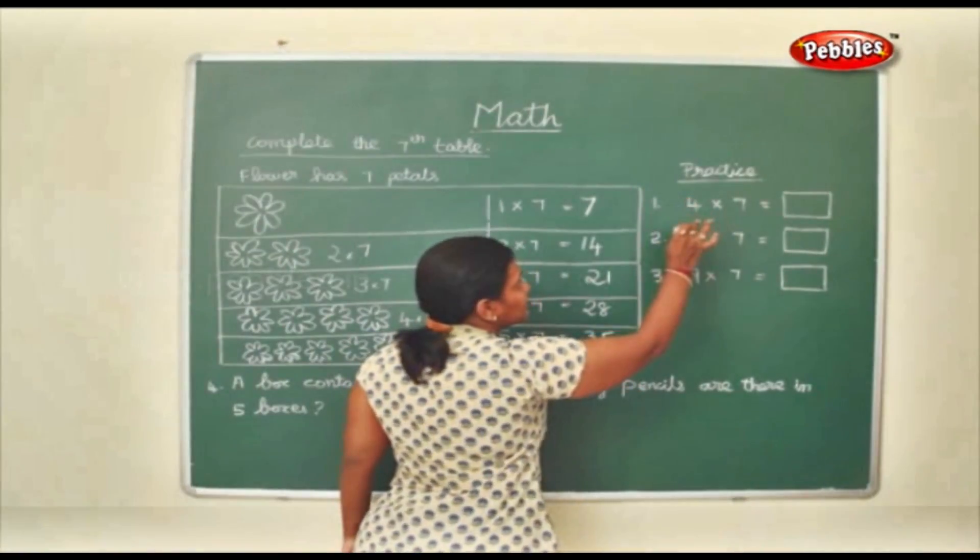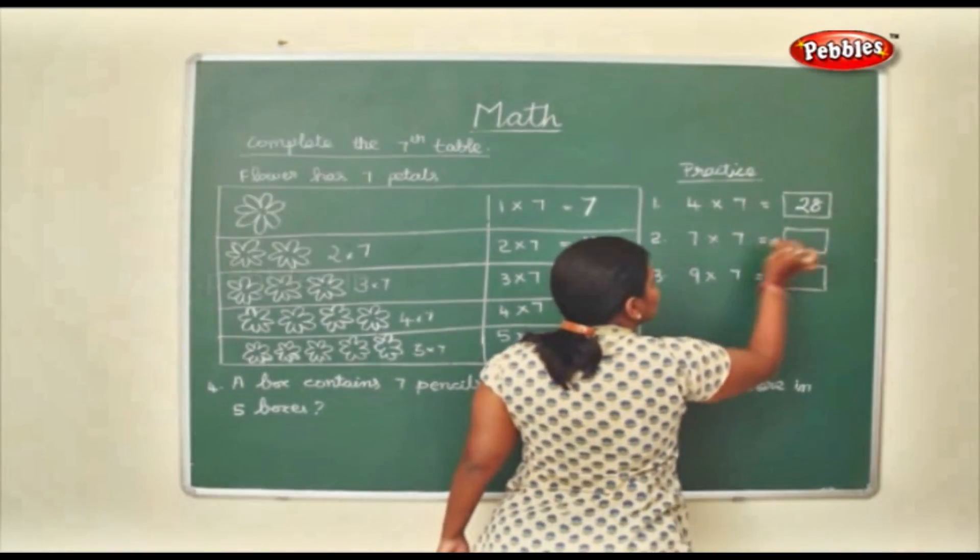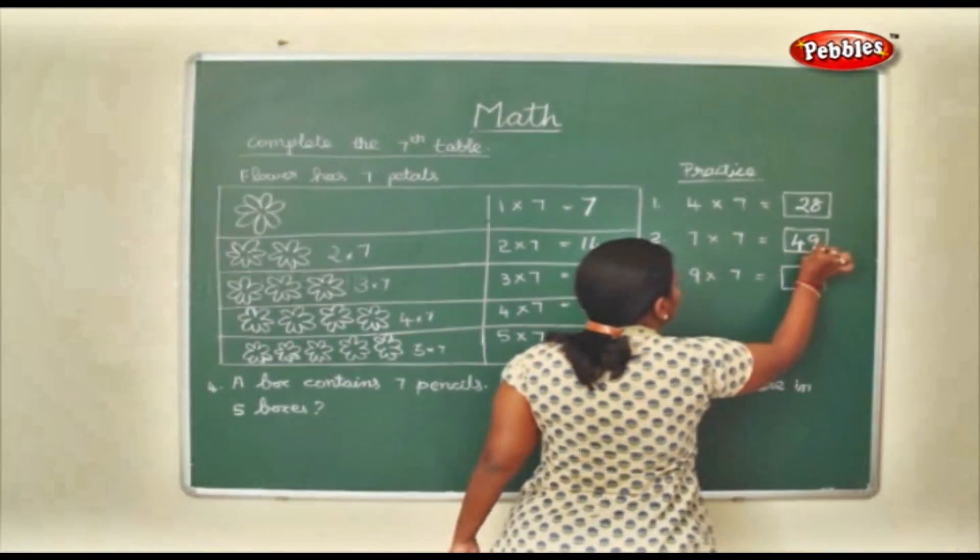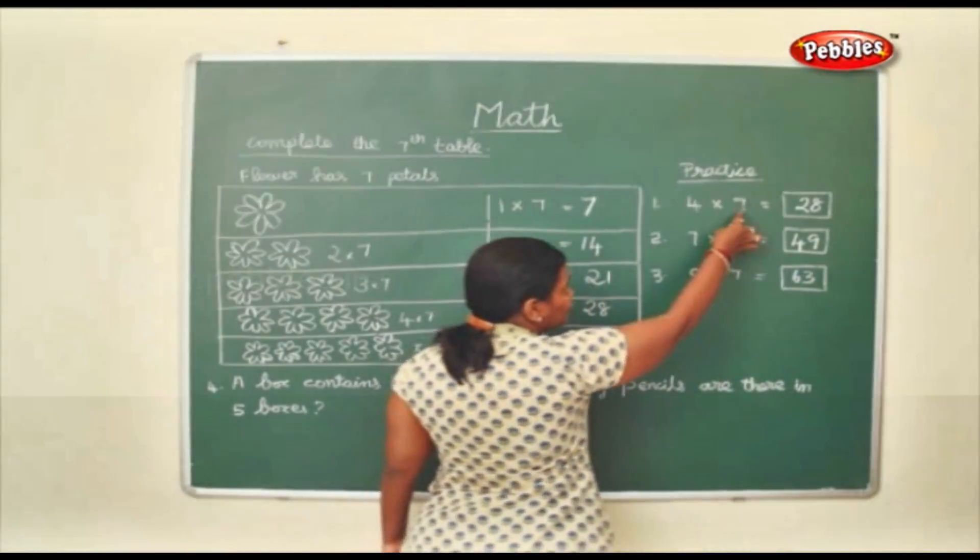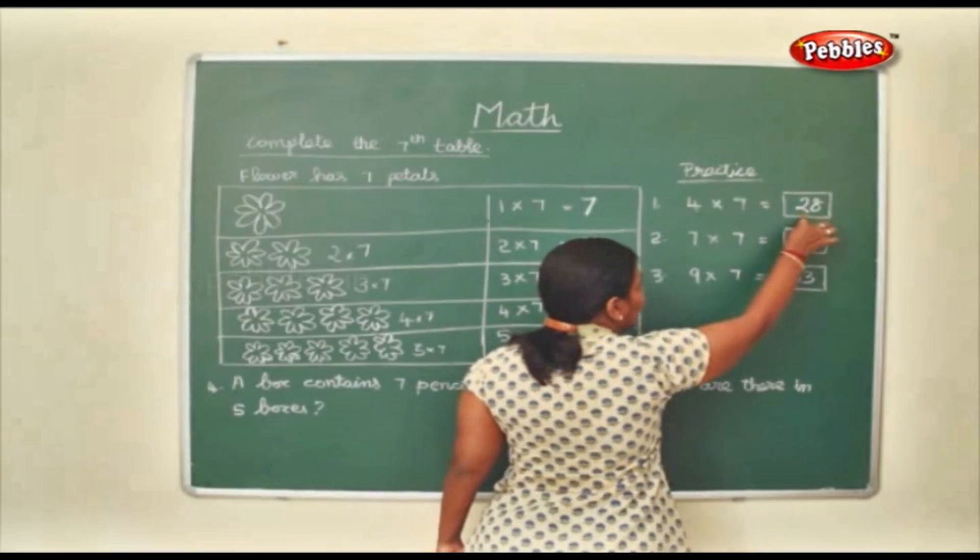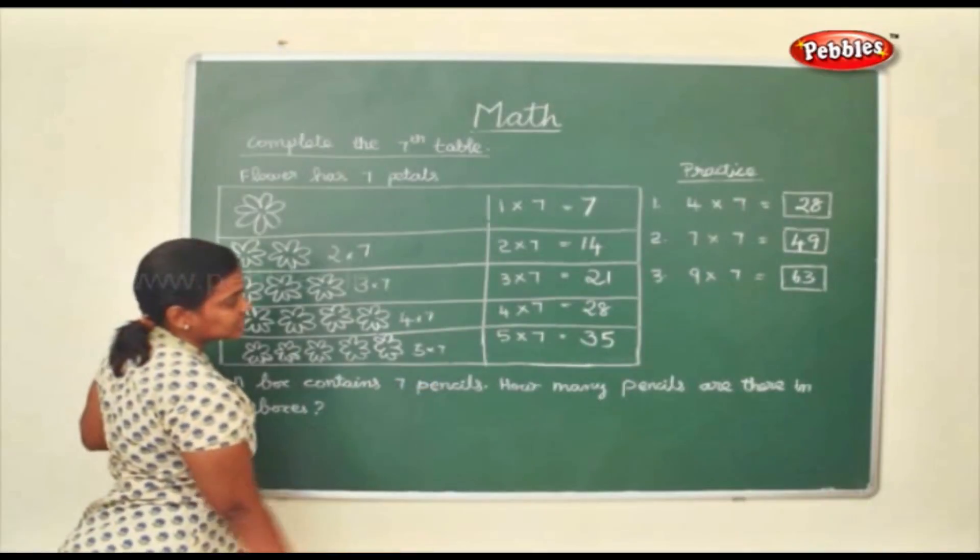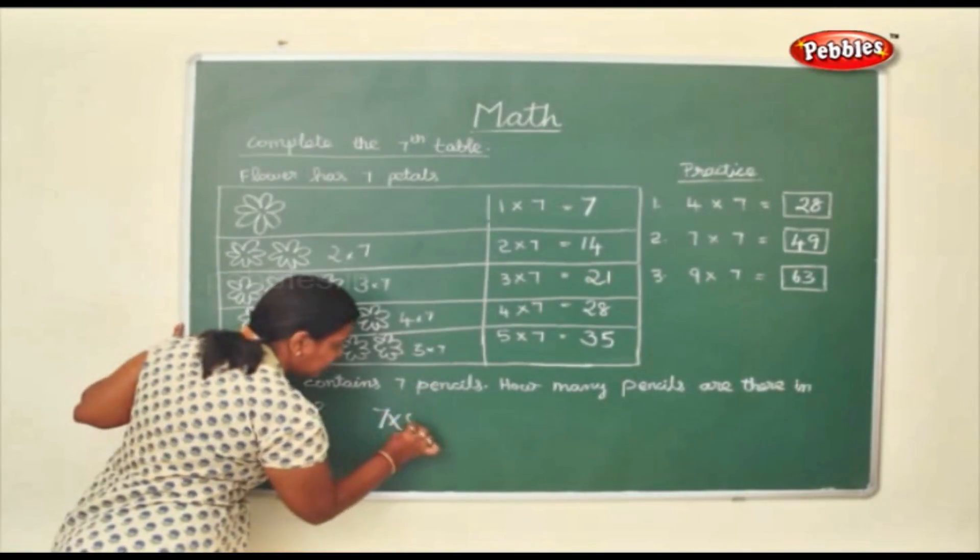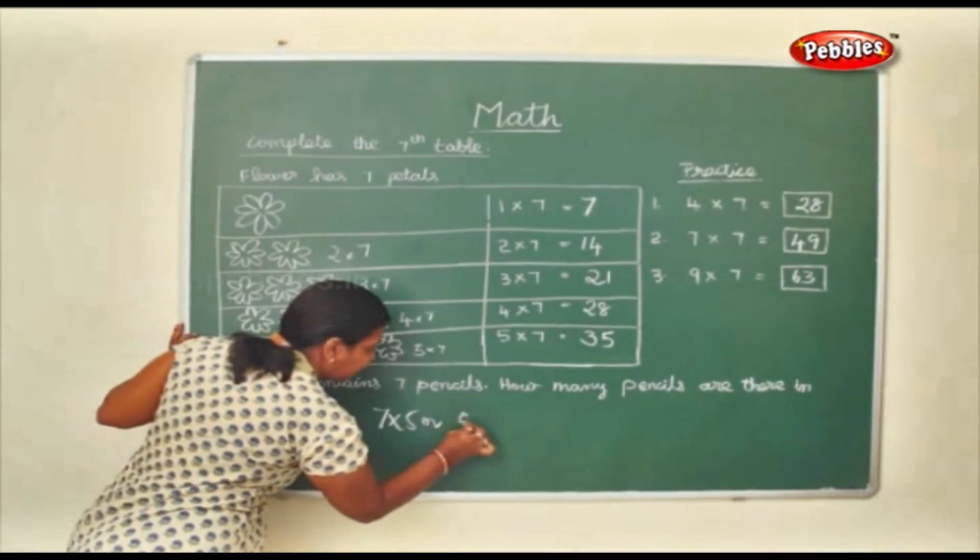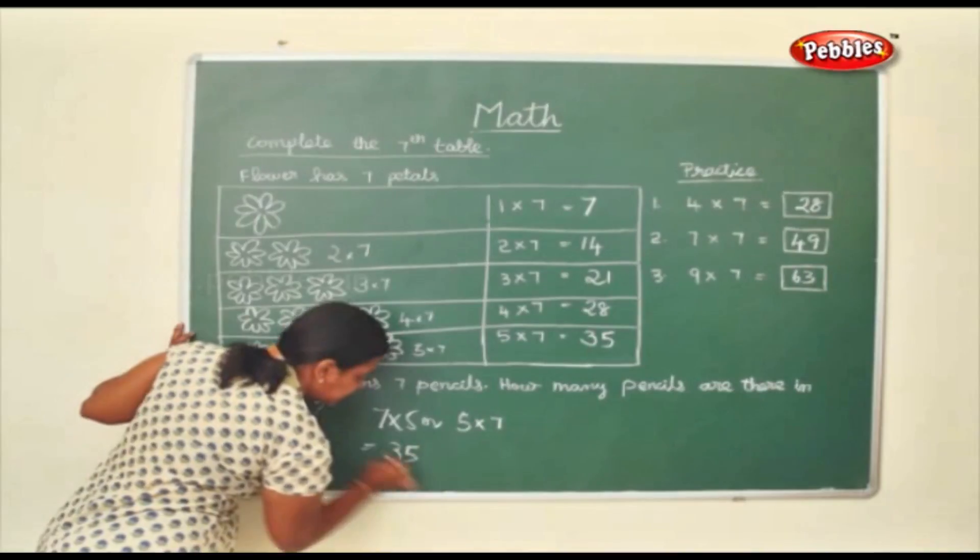Now we shall practice some sums. 4 into 7, 28. 7 7's are 49. 9 7's are 63. Again I tell you, even if you change the order of the number, the answer will not change. A box contains 7 pencils. How many pencils are there in 5 boxes? So it will be 7 into 5 or 5 into 7. So both the answer will be 35.